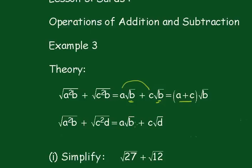Now in this case here, when you simplify them here, you've got root b and a root d, which is not a common factor. So you've just got to leave it in that particular form.